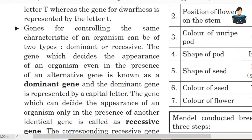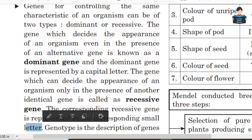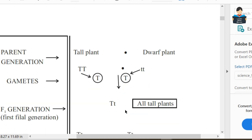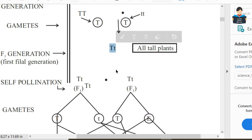The gene which can decide the appearance of an organism only in the presence of another identical gene is the recessive gene. For example, two small t's together would produce a short plant. The recessive gene is represented by the corresponding small letter.